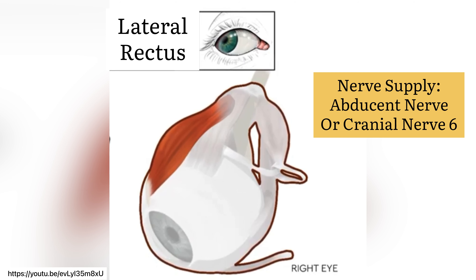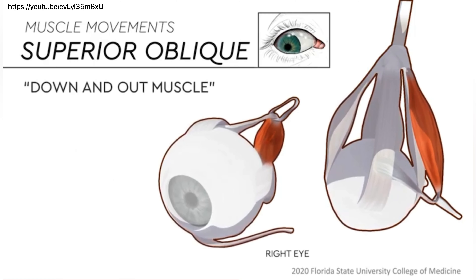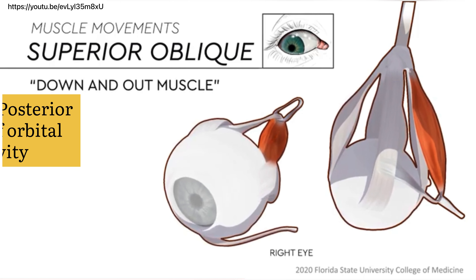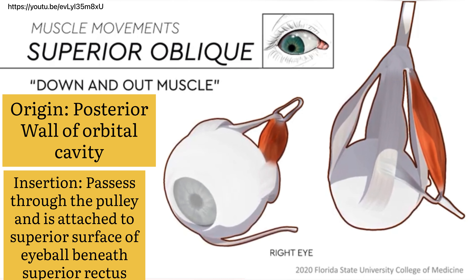Speaking of this unopposed muscle, the lateral rectus is responsible for rotating the eyeball so that the cornea looks laterally. It has the following origin and insertion. It is innervated by the abducent nerve that, when affected, could lead to internal strabismus.